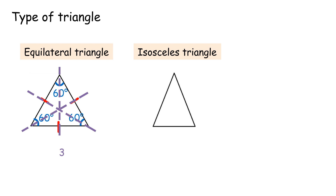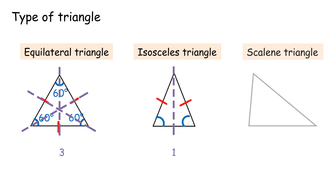Isosceles triangle: two of the sides have the same length, the two base angles are of the same size, and it has 1 axis of symmetry. Scalene triangle: all the sides are of different lengths, all the interior angles are of different sizes.